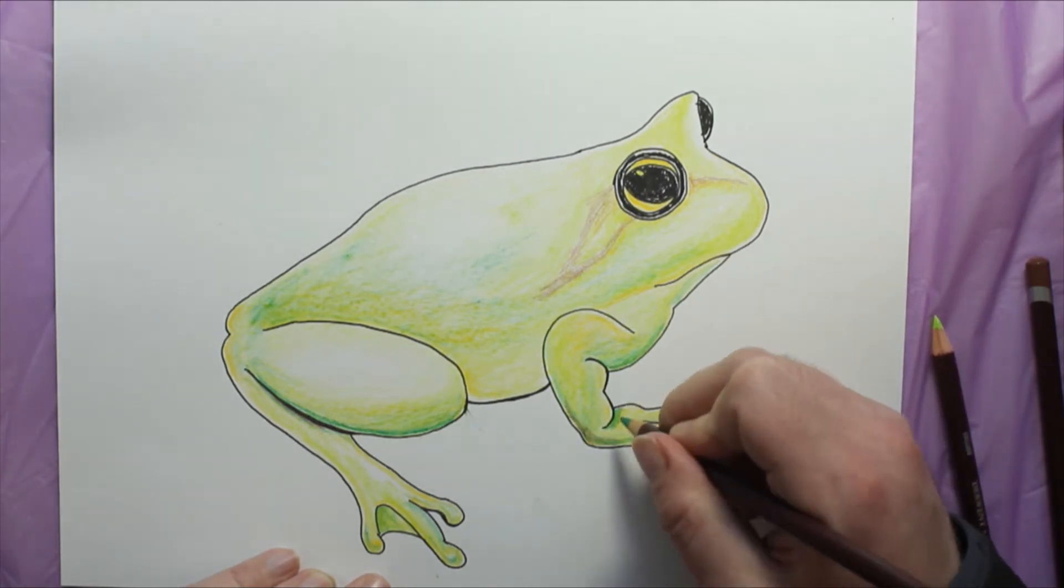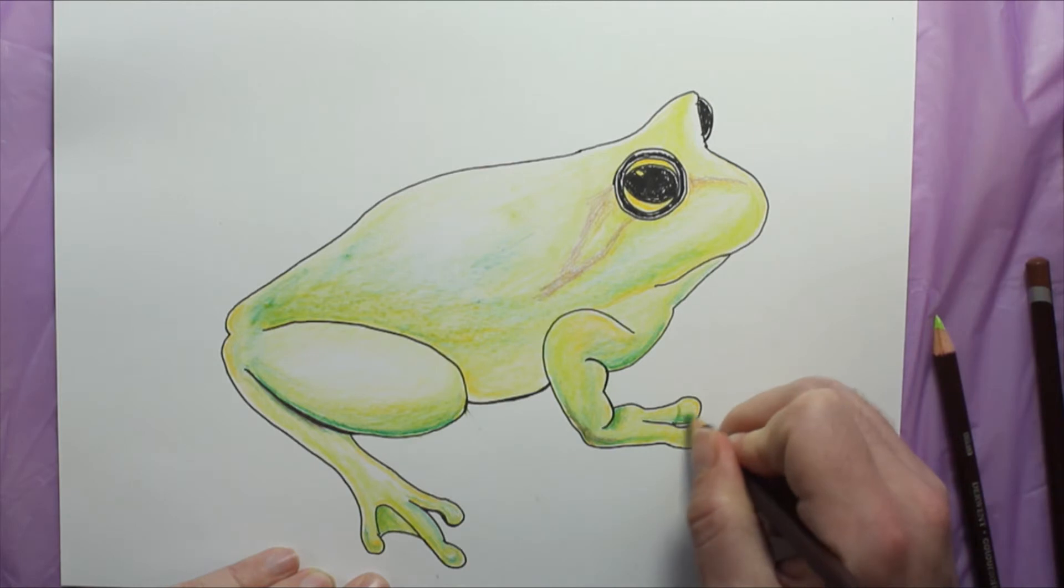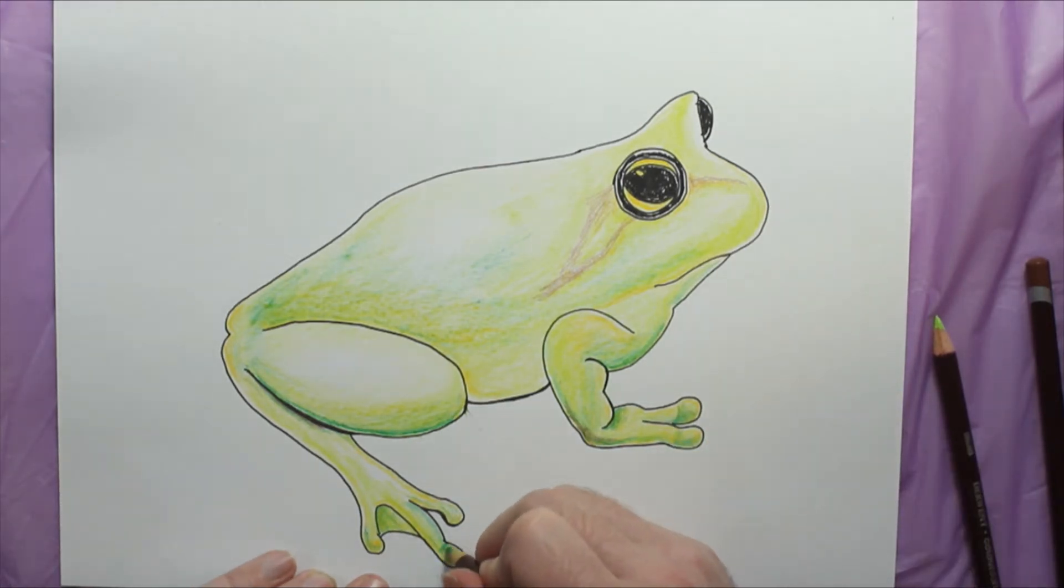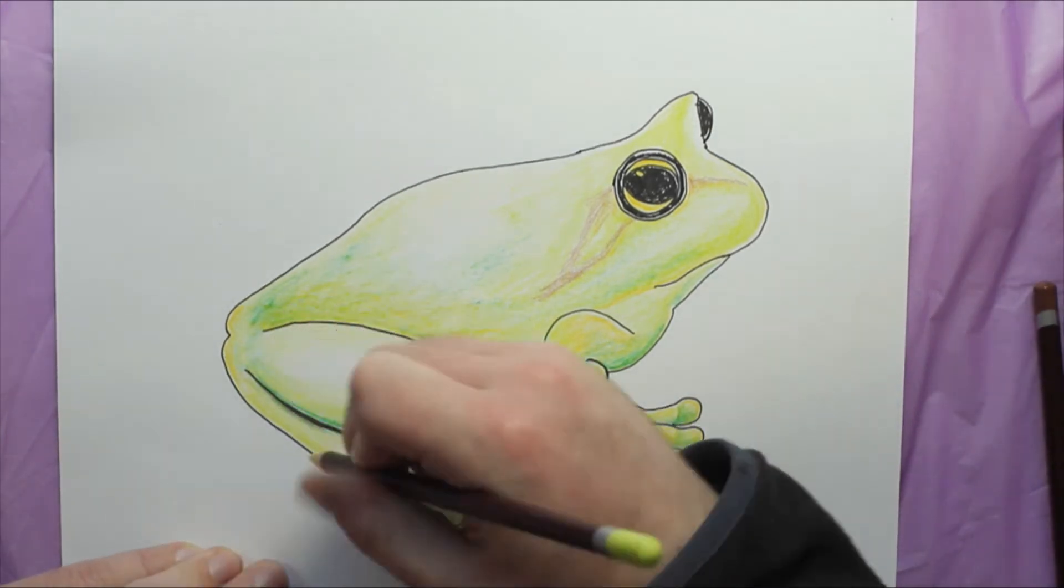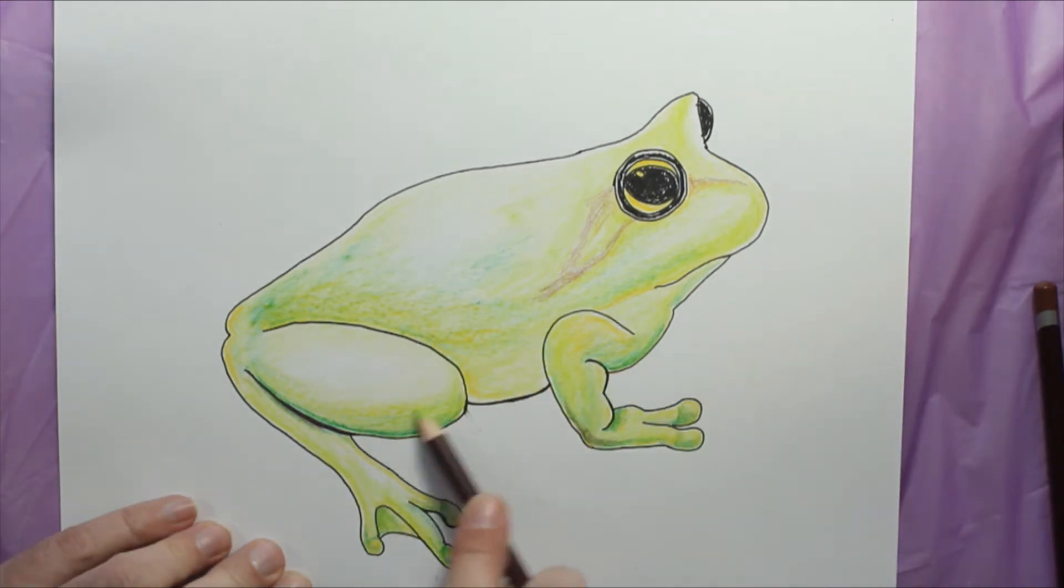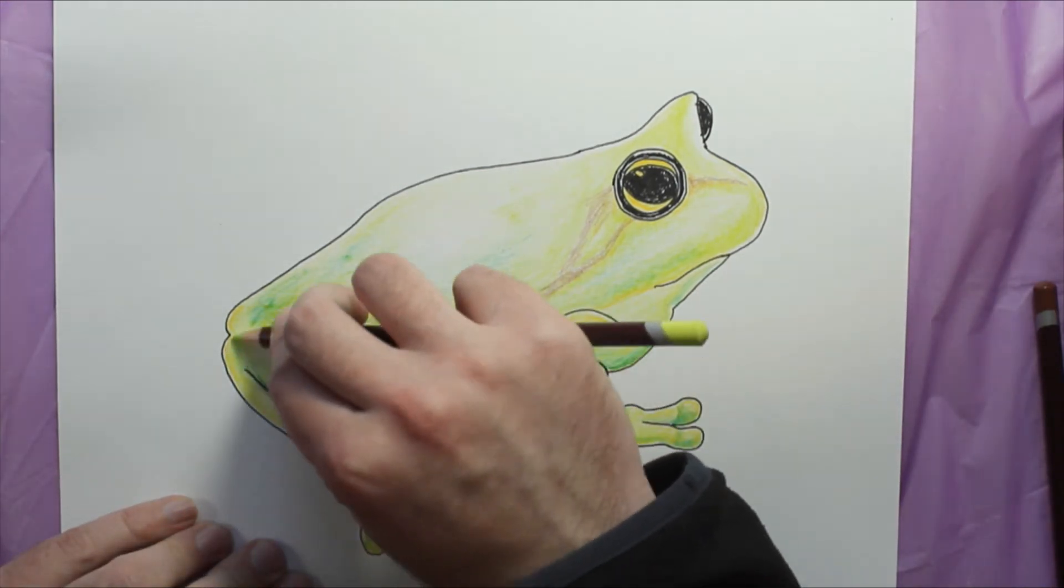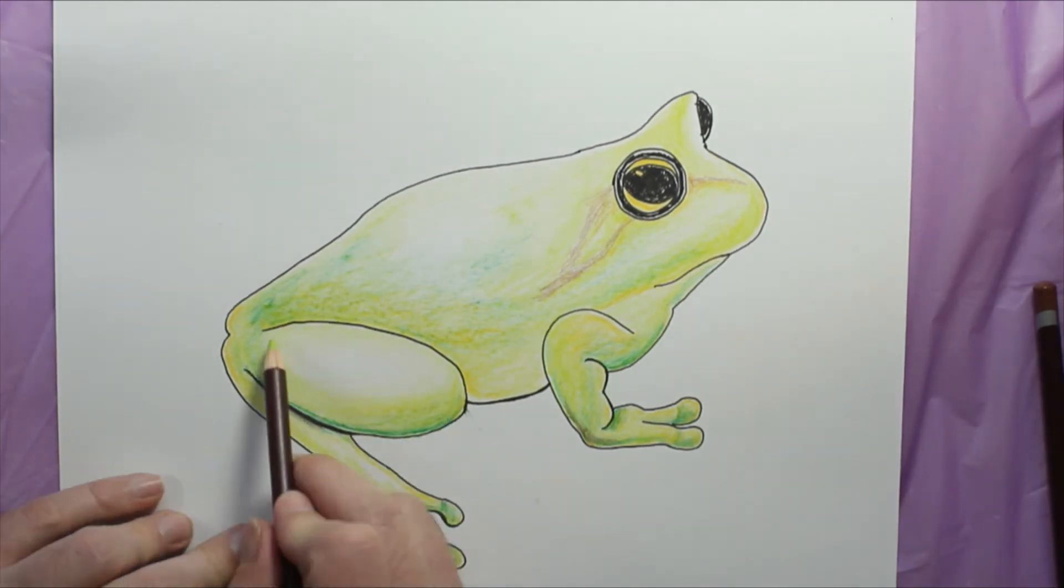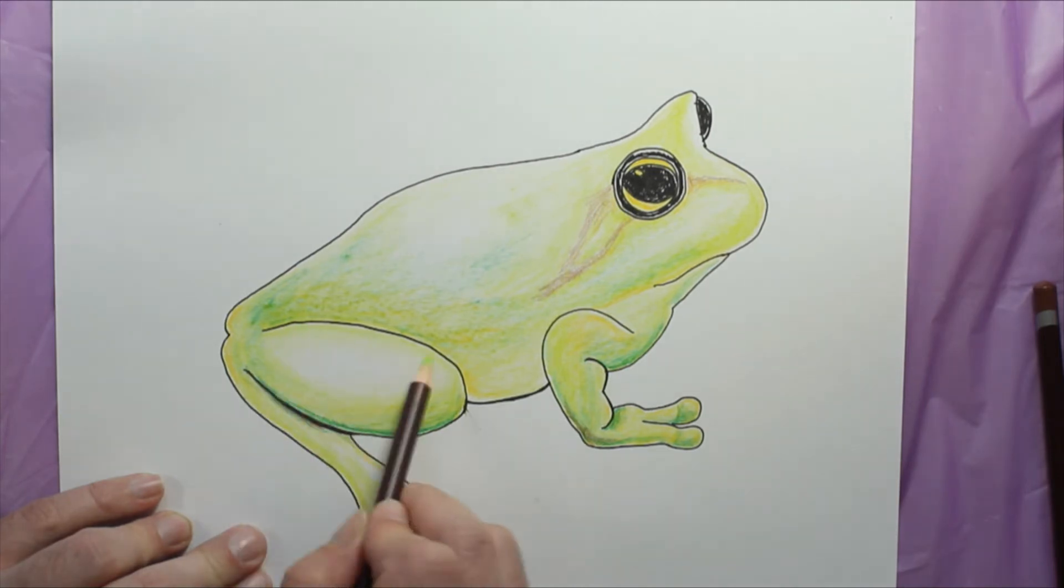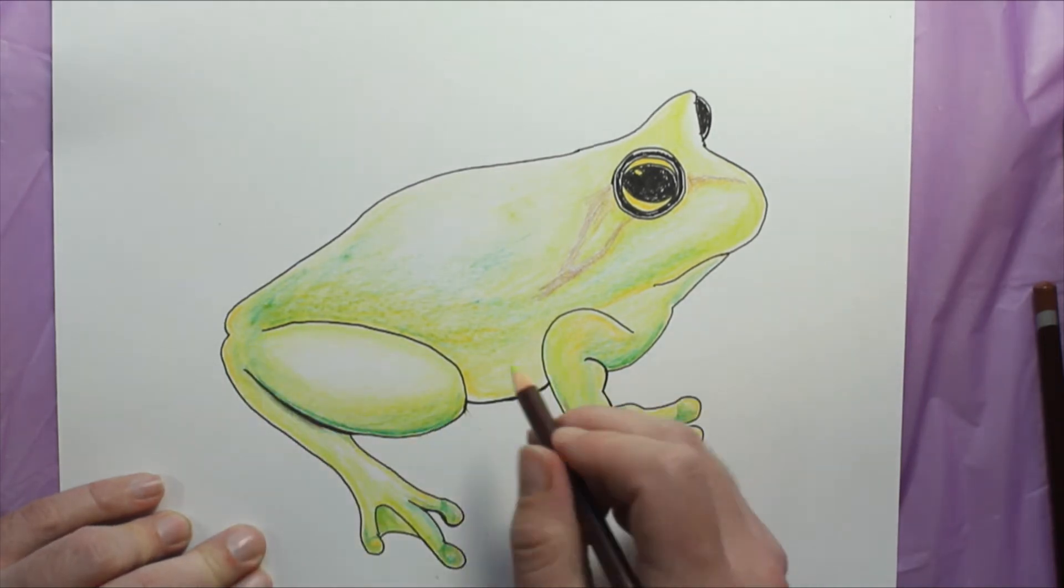Put some coloring in the web there and adding some shading to the foot. You get kind of the rounding of the toes because this frog is more of a tree frog, so he's kind of got those sticky pads on his foot.